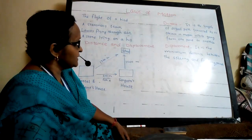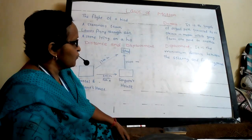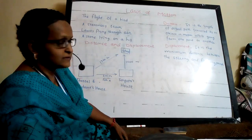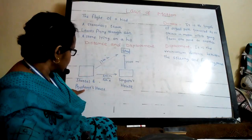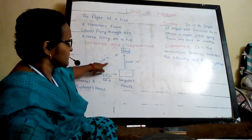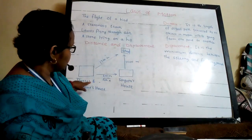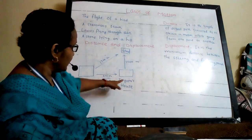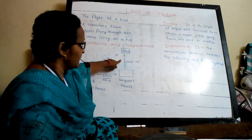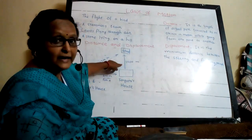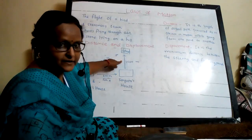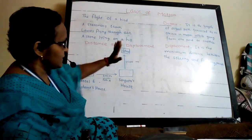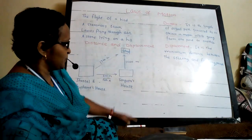Distance means the actual path covered from one point to another point — the length of the path traveled. Write the definition: distance is the length of actual path traveled by an object in motion while going from one point to another point. Prashant covered 1300 meters distance, Sheathen covered 1700 meters distance, and Sangeeta covered 1200 meters distance. That length of actual path is called distance.